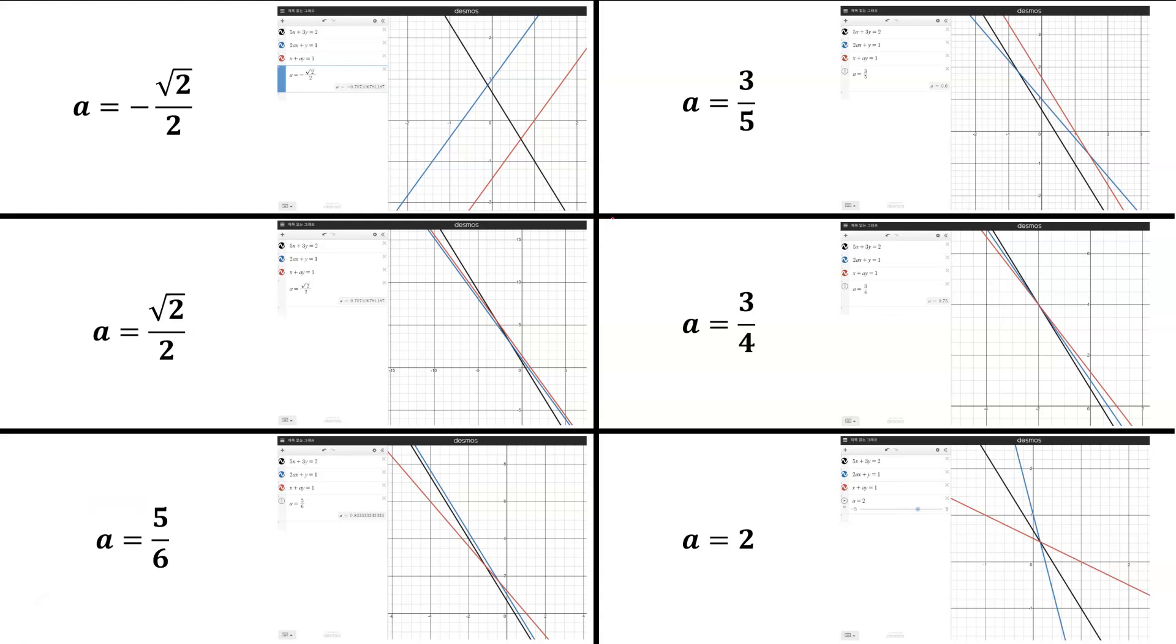Using the graphing calculator, we can plot each case. So you can see that in these two cases, three lines meet at a single point. And in other four cases, two out of three lines are parallel. For example, this and this.